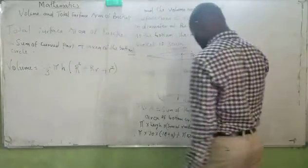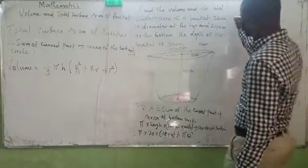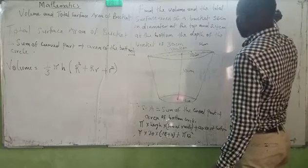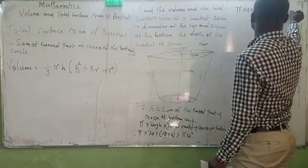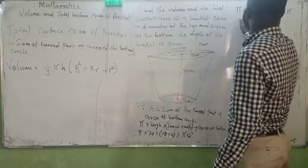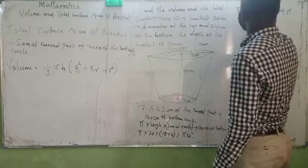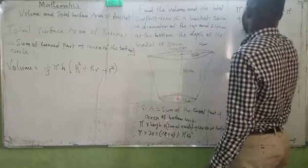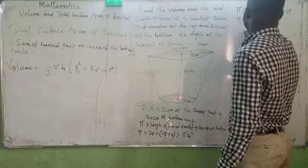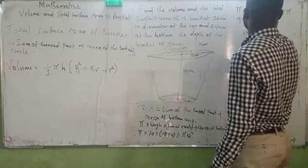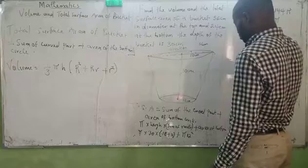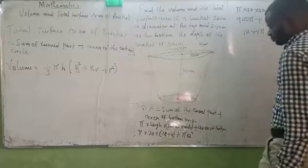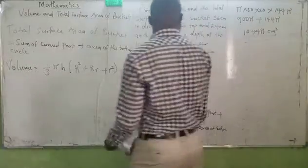Here will be 30. It means I will be having 30 pi multiplied by 30 multiplied by 30. Here will be 144 pi. Here will be 900 pi plus 144 pi, which I will be having 1044 pi centimeter squared. That is the total surface area.